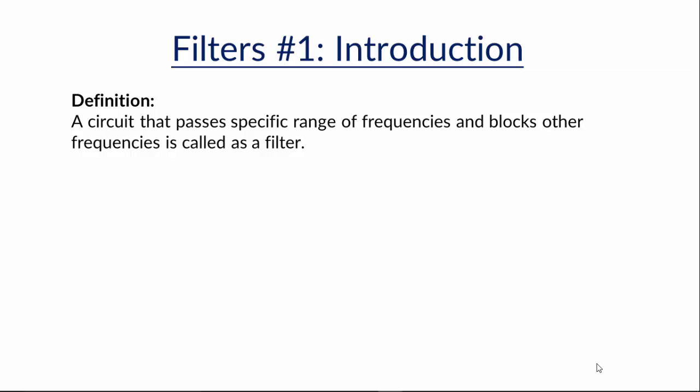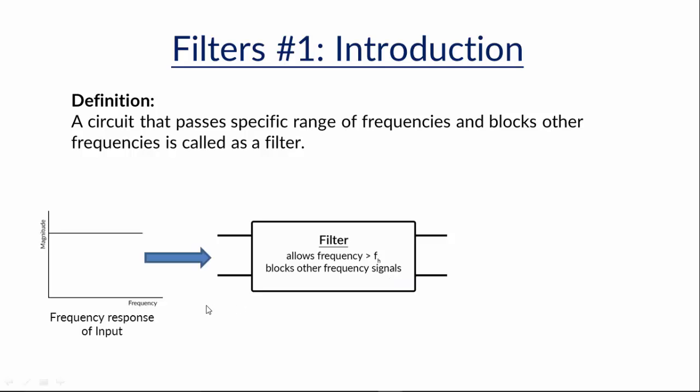Let's look through an example to understand it better. Consider a filter that allows frequencies after a frequency fh to pass but doesn't allow other frequencies to pass. Now we input a signal that has all the frequency components in it and we pass it through the filter.